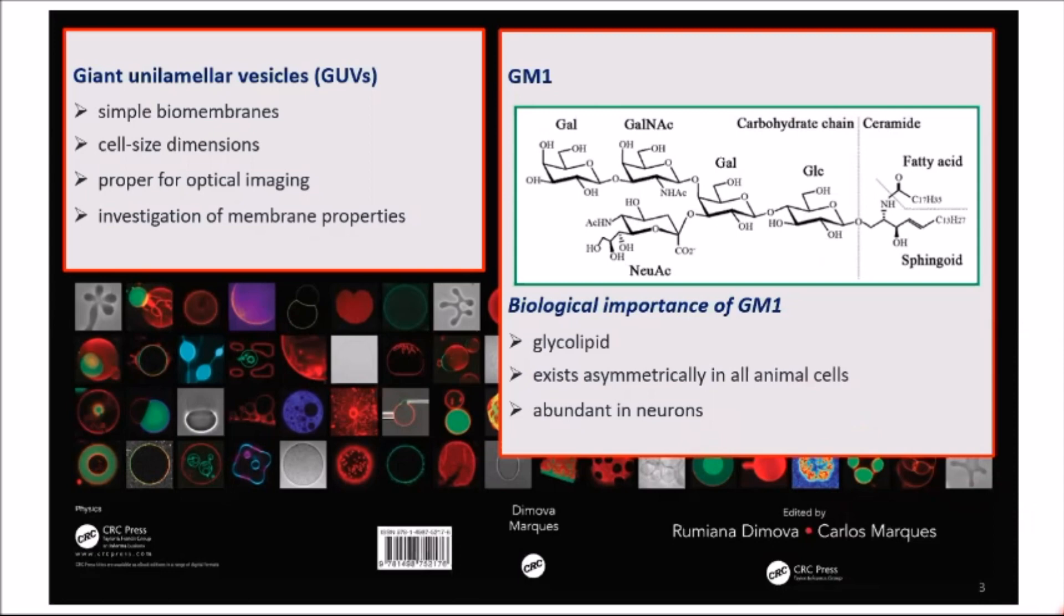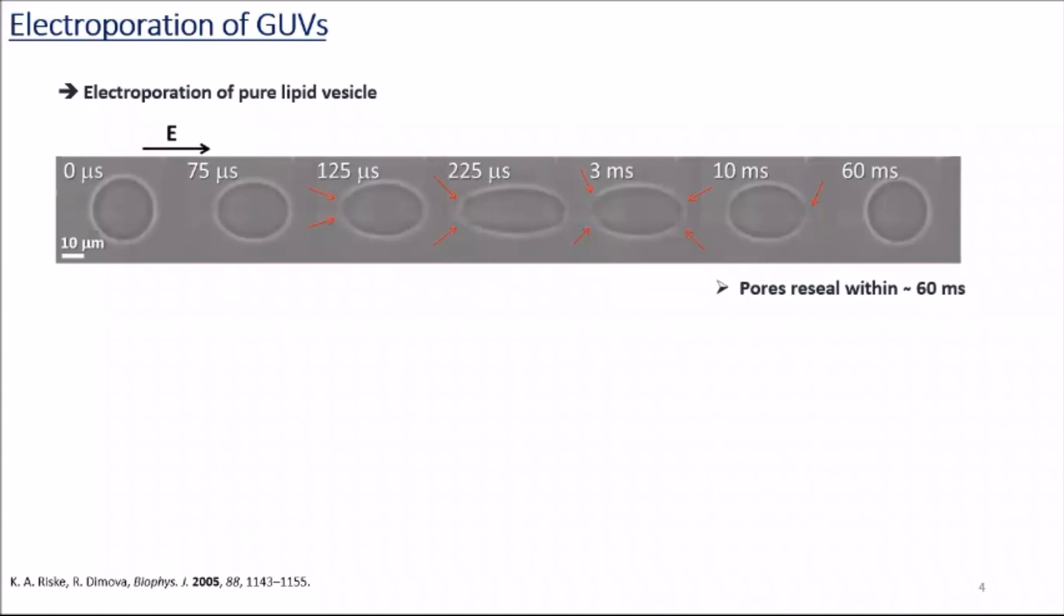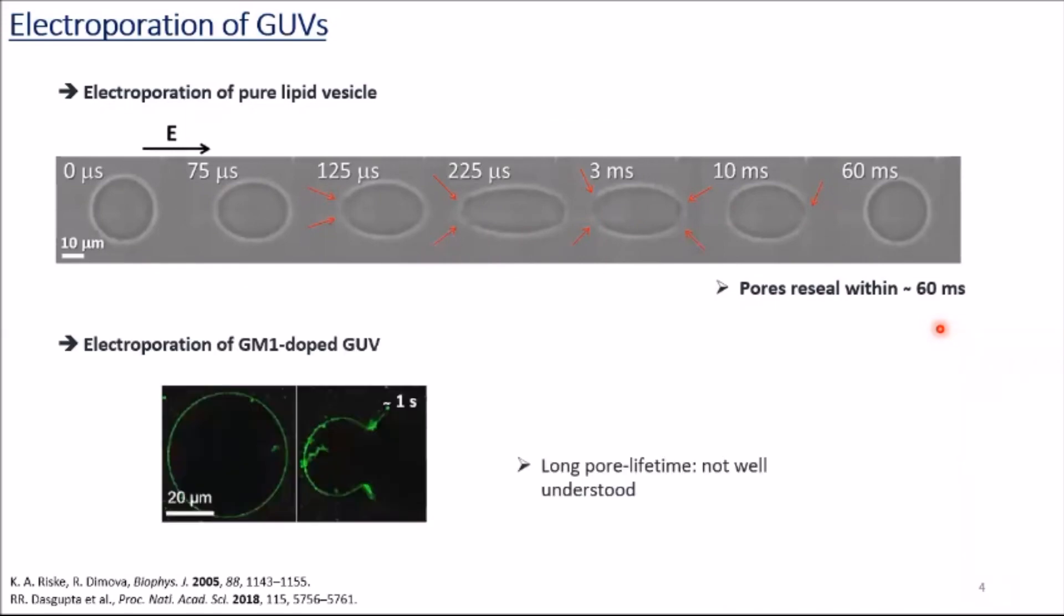In order to study membrane stability, I applied electric fields and GUVs opened pores. In previous studies, the pores of typical pure lipid vesicles were found to reseal around 60 milliseconds. However, in the presence of GM1, GUVs were found to have longer pore lifetime, which was more than one second. However, the reason was not known.